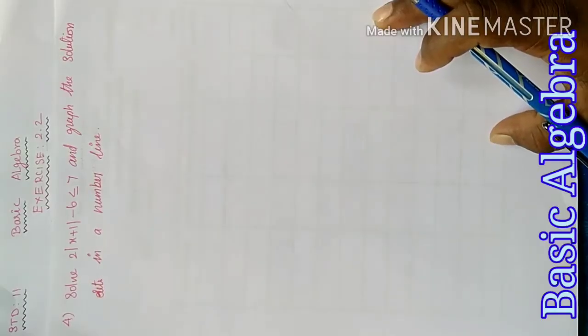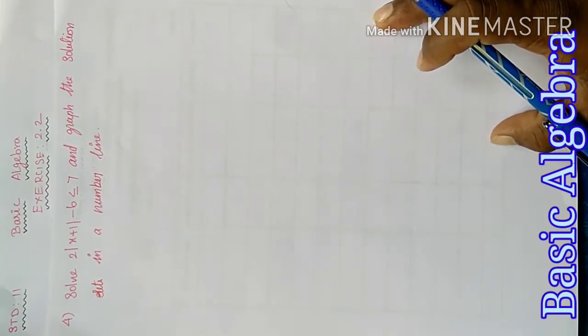Good morning students. Today our 11th standard chapter, Basic Algebra, exercise 2.12, fourth sum. Solve 2 times the modulus of x plus 1 minus 6 less than or equal to 7, and graph the solution set on a number line.